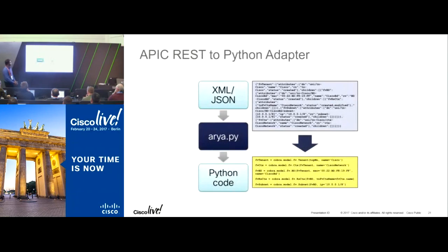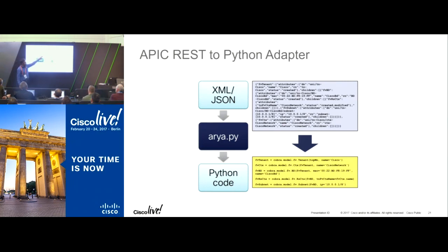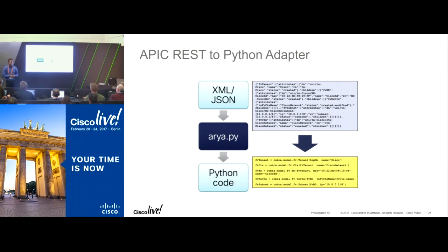If you hate programming or don't have time to write Python code, we've built a Python adapter called ARIA. You create a POST message, plug it into ARIA, and it generates the Python code for you. You don't need to worry about syntax or even know the programming language. Just run the generated file with Python and it runs the entire code. This tool is available free on GitHub — no monetary cost attached — and I highly recommend checking it out.